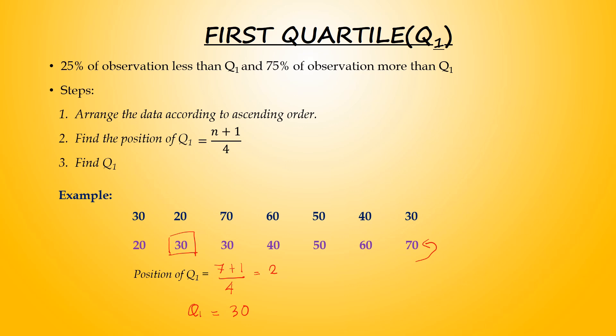Therefore, Q1 equals 30. How to interpret: 25% of observations are less than 30, and the other 75% is more than 30.